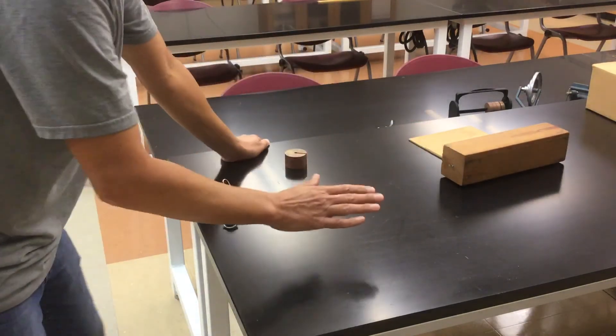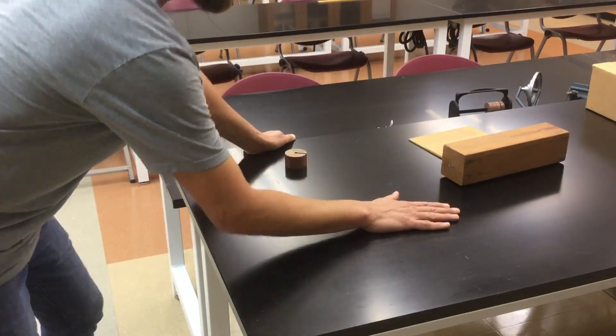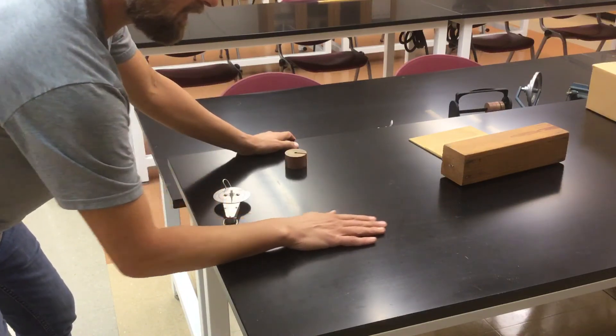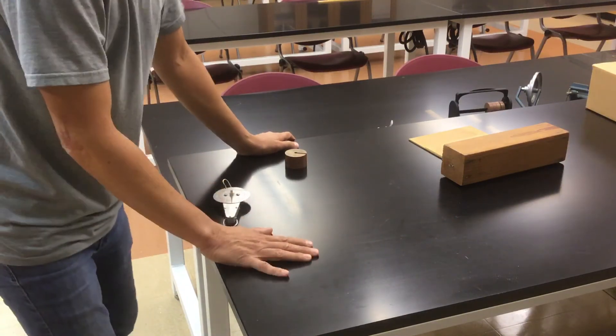You can try this with your own hand. Put your hand on the desk and go dead arm and pull your hand toward you. You can feel the amount of sliding friction.